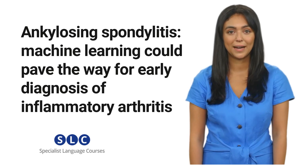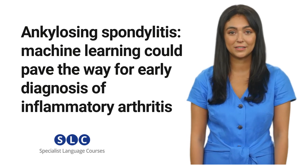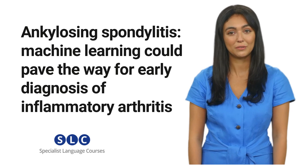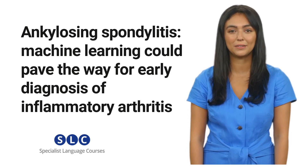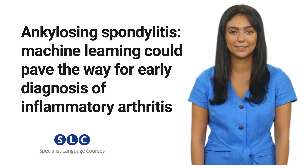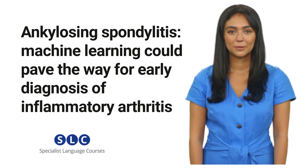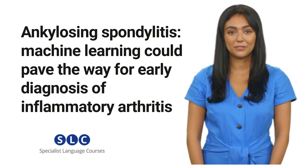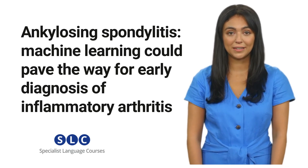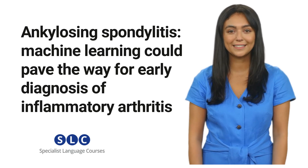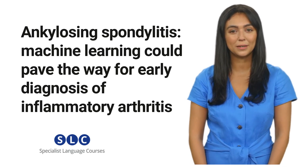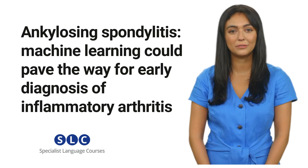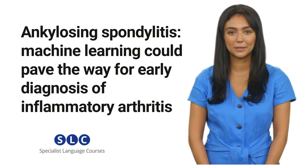Ankylosing spondylitis, or AS, is the second most common type of inflammatory arthritis, often affecting teenagers and young adults. Symptoms of AS can include back pain, stiffness, arthritis, enthesitis, and fatigue. Over time, these symptoms can lead to spinal fusion, which significantly affects quality of life, particularly in young people.